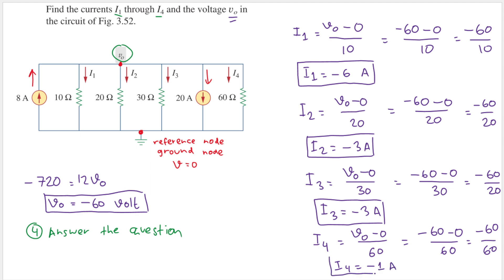We have now answered all the questions: we know all the currents i1 through i4 and also v0. Thank you for watching, and see you in the next video!